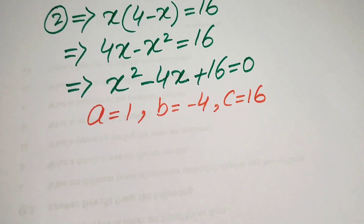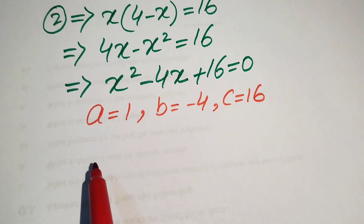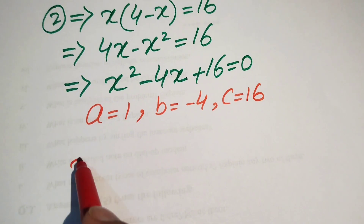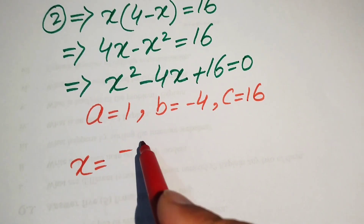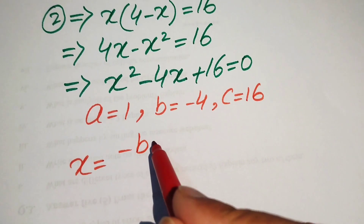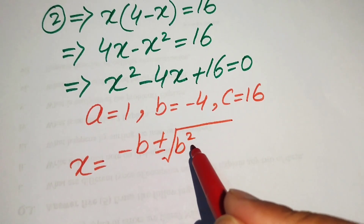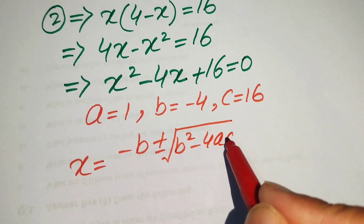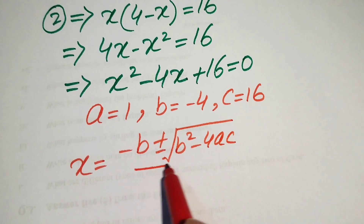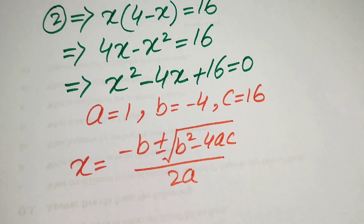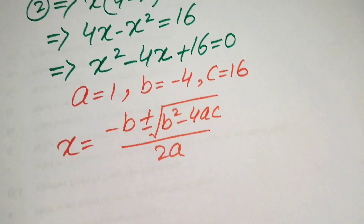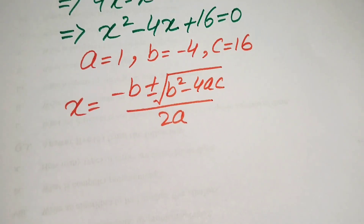The quadratic formula is x equals minus b plus or minus the square root of (b² minus 4ac), all divided by 2a. We now substitute the values of a, b, and c into this formula.